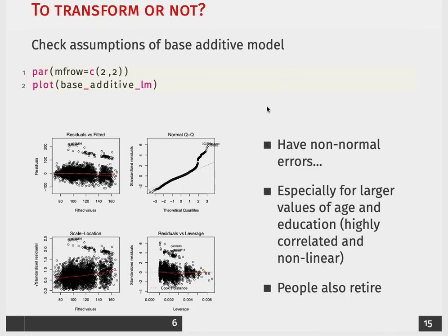Moreover, people also retire, so it's definitely not the case that individuals who are older continually make more money. We need to think more carefully about how we're going to transform our variable for age.